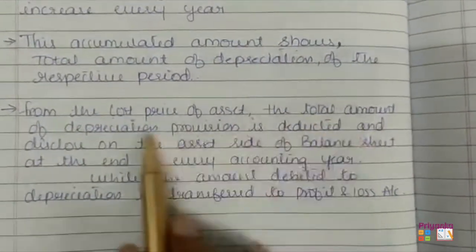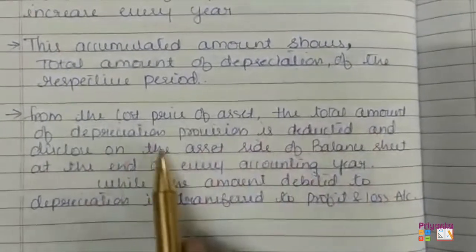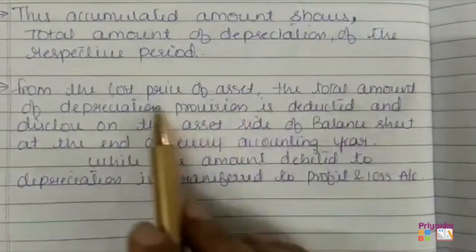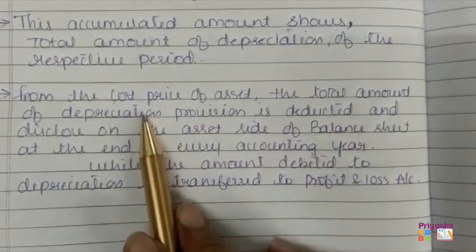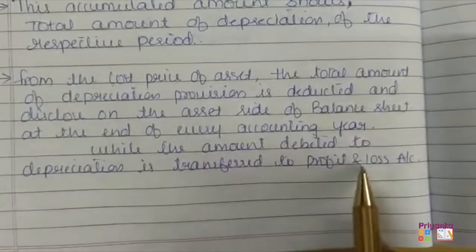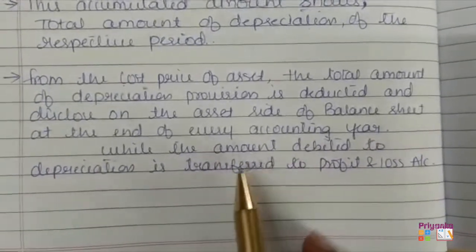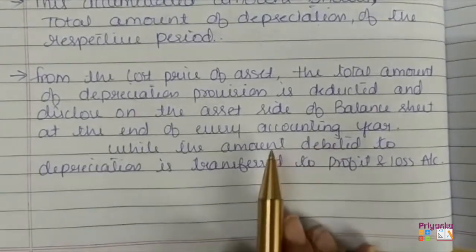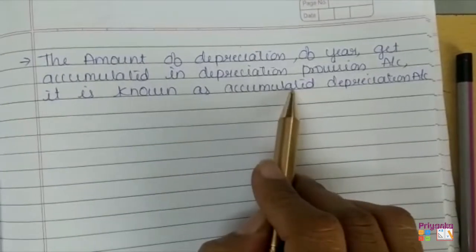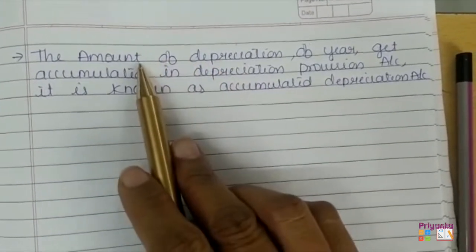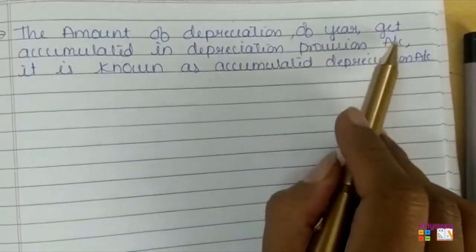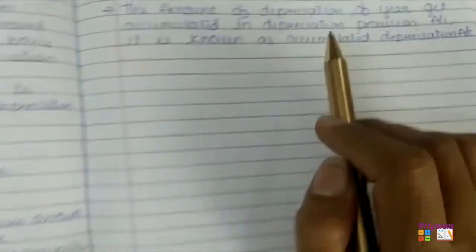From the cost price of the asset, the total amount of the depreciation provision is deducted and disclosed on the asset side of the balance sheet, which is what we normally used to do. The depreciation amount for each year gets accumulated in the depreciation provision account — it is also known as the accumulated depreciation account. All yearly depreciation amounts are added together and moved to the depreciation provision account. This theory will be clearer when we solve the question.